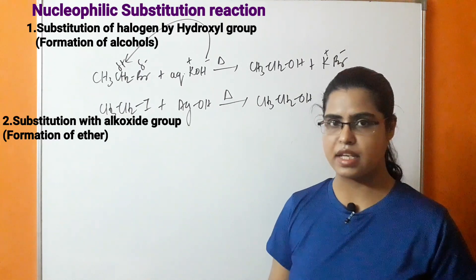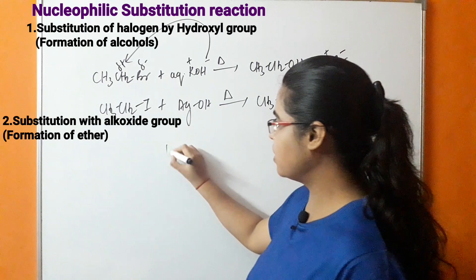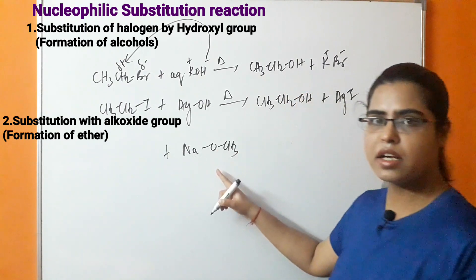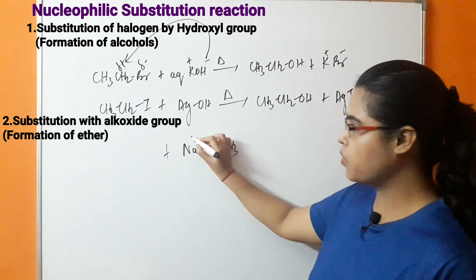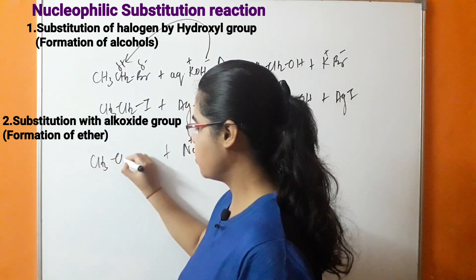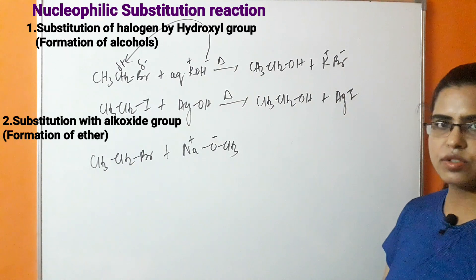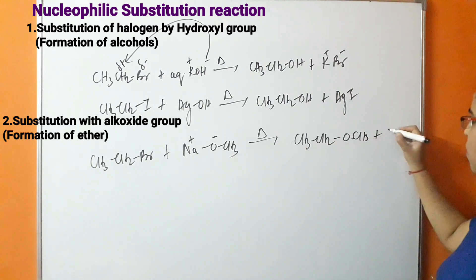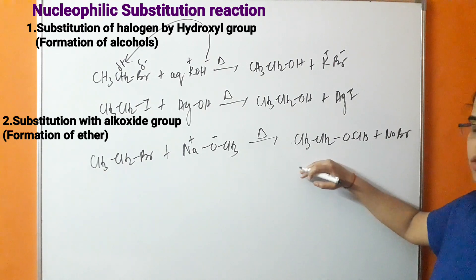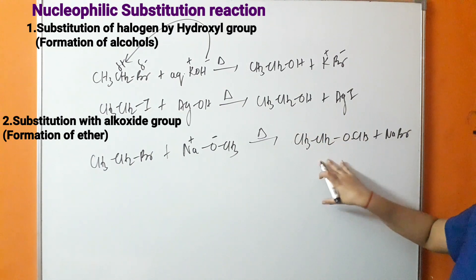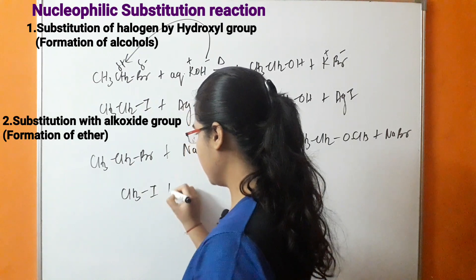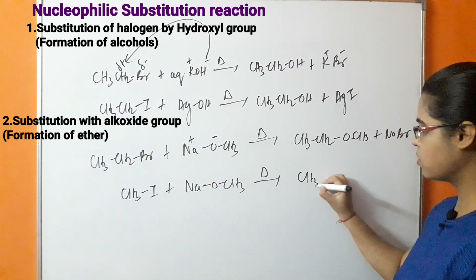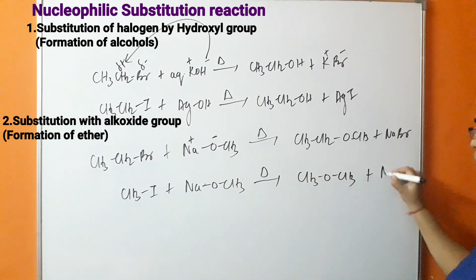The second nucleophilic substitution reaction is substitution with an alkoxy group, which results in the formation of an ether. The reagent used is sodium ethoxide or potassium ethoxide — an ionic compound where the negative charge is on the oxygen and positive charge is on sodium. In the presence of CH₃CH₂Br, an ether (methoxy ethane) is formed and NaBr is removed. Similarly, with methyl iodide and sodium ethoxide, methoxy methane is formed and NaI is removed.